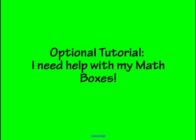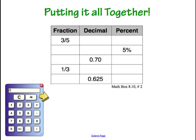This is an optional portion of the video. I'm going to show you how to complete problems on your math boxes that have to do with fractions, decimals, and percents. This is a problem you may see in your math journal where they give you a box with fractions, decimals, and percents, and in each line you're missing two of the three. Let's do this one together. In the first line, we have the fraction 3 fifths, but we are missing the decimal and the percent.